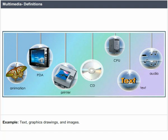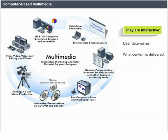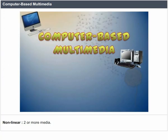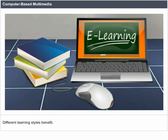Media types include text, graphic drawings and images. Computer-based multimedia is interactive — the user determines what content is delivered, when it is delivered and how. It is non-linear and involves two or more media. Computer multimedia provides a multisensory experience in the real world, multisensory memory inference, and benefits for different learning styles.